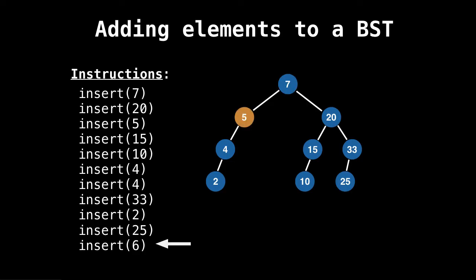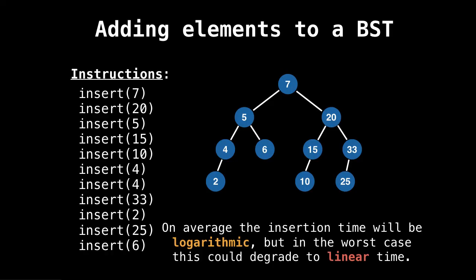And finally, six, so once left, once right, and we've inserted everything into our binary search tree. So on average, the insertion time is going to be logarithmic. But in the worst case, this behavior could degrade to linear time. Let's have a look at that.